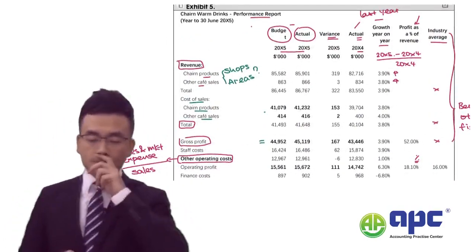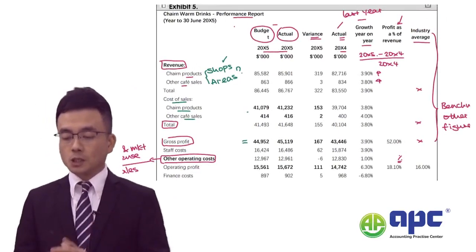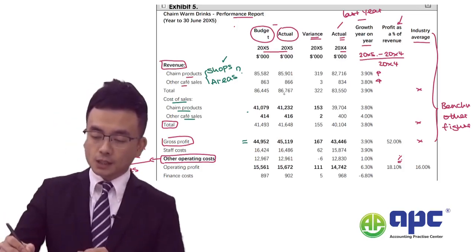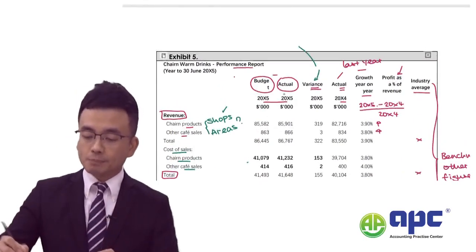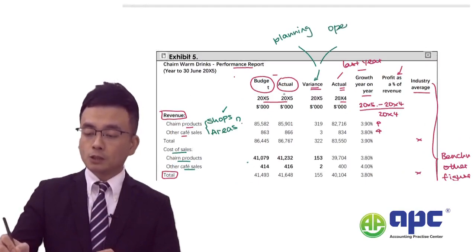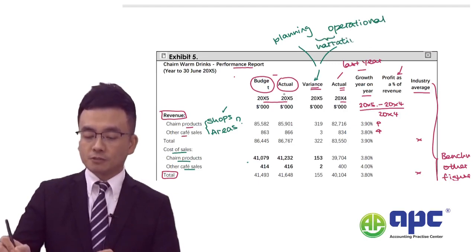We can further break this down and benchmark against that. Yes, we have the variance, but you can separate it into planning variances and operational variances, and include narrative explaining how to separate them.